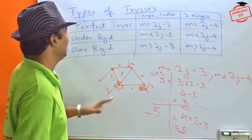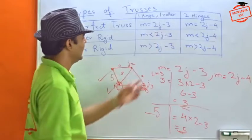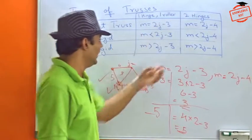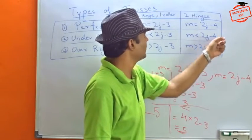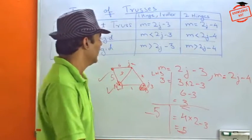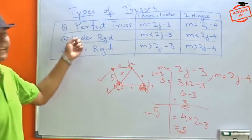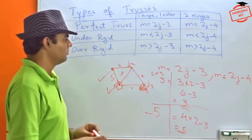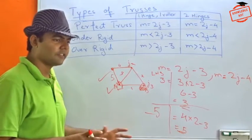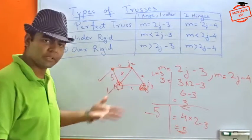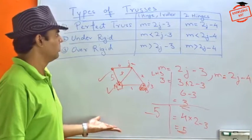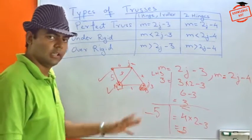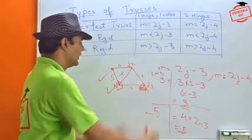Suppose there is a case when the number of members is less than 2J minus 3 for one hinge one roller, or less than 2J minus 4 for two hinges. Then the system is under-rigid. For an under-rigid system, the condition of stability is not obtained because this is not a stable system. So these systems are not in our syllabus or for our consideration.